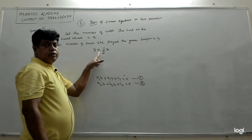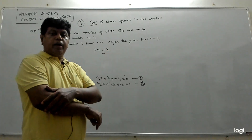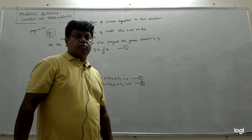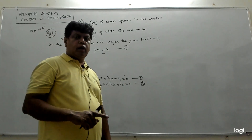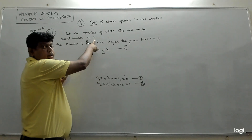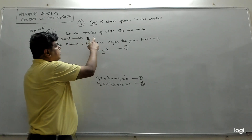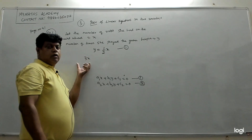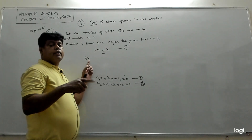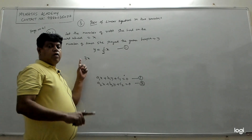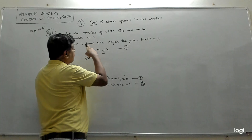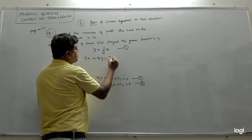So the first equation is y equals one-half x — the number of times she plays hoopla equals half the number of giant wheel rides. The second piece of information: each ride costs rupees 3 and she had x rides, so she spent 3x on the giant wheel. Each hoopla game costs rupees 4 and she played y times, so she spent 4y on hoopla. The total is rupees 20, giving the second equation: 3x plus 4y equal to 20.